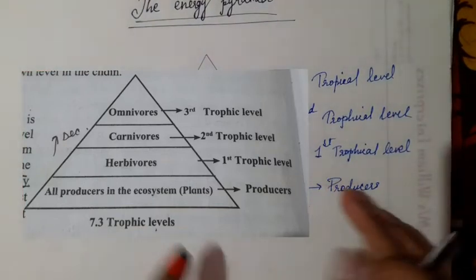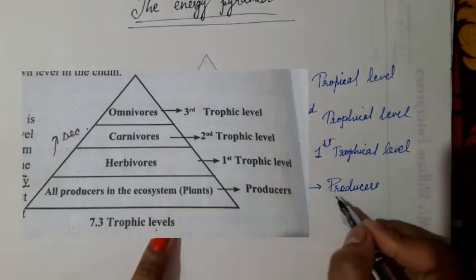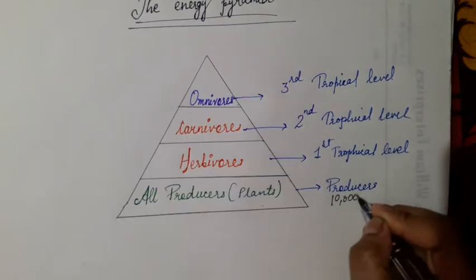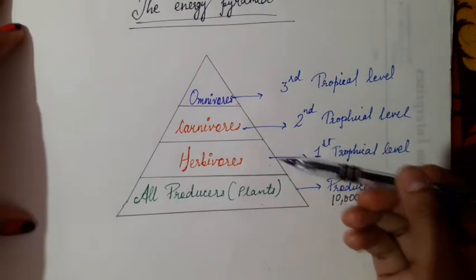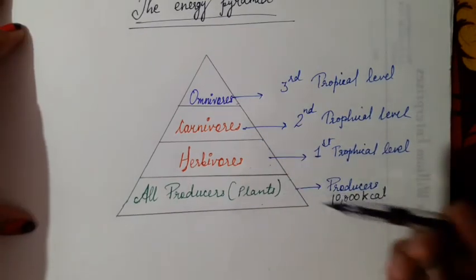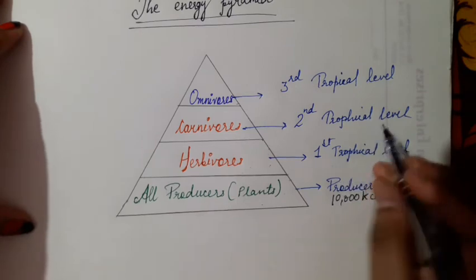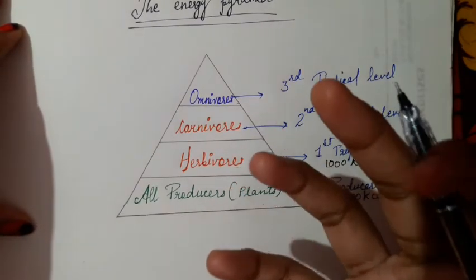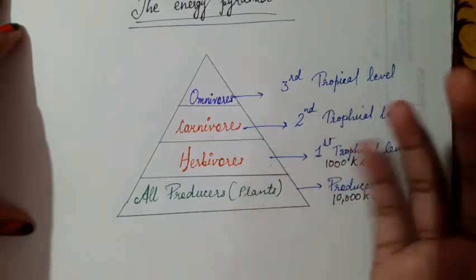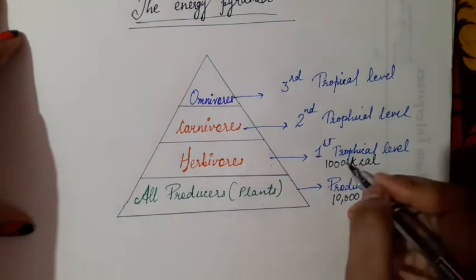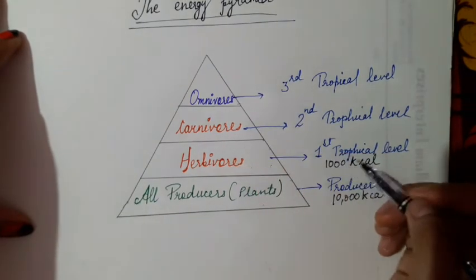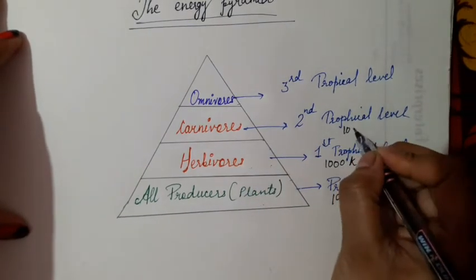Suppose the plants are getting 10,000 kilocalories. So when these herbivores are eating these plants, out of these they are getting only 1,000 kilocalories. Rest of the energy is taken off in the form of heat. These herbivores when eaten by the carnivores, they again get only 100 kilocalories.